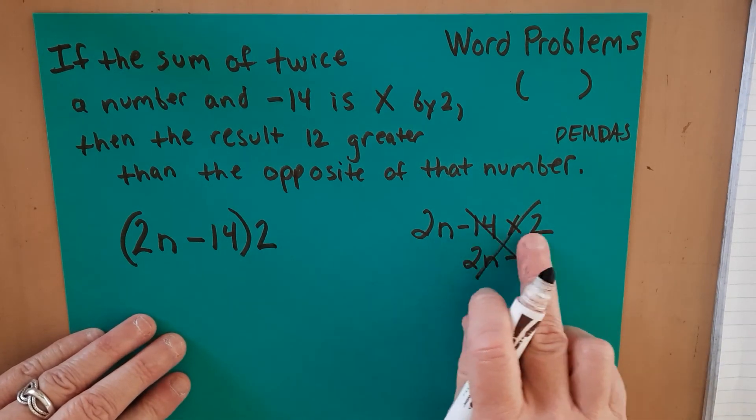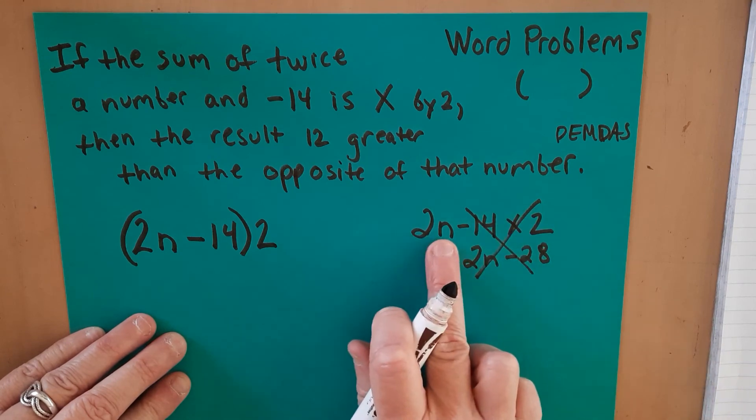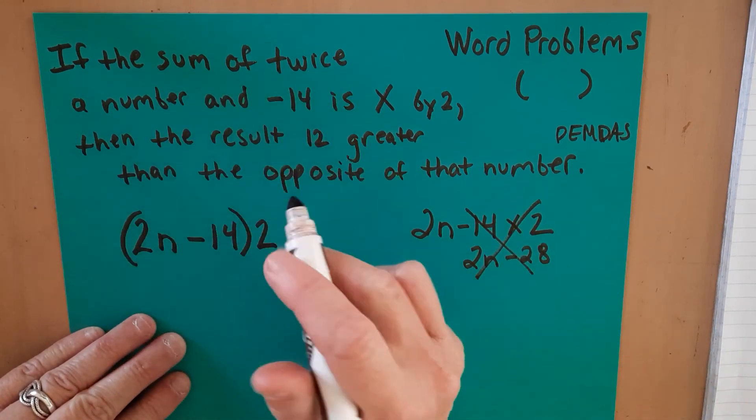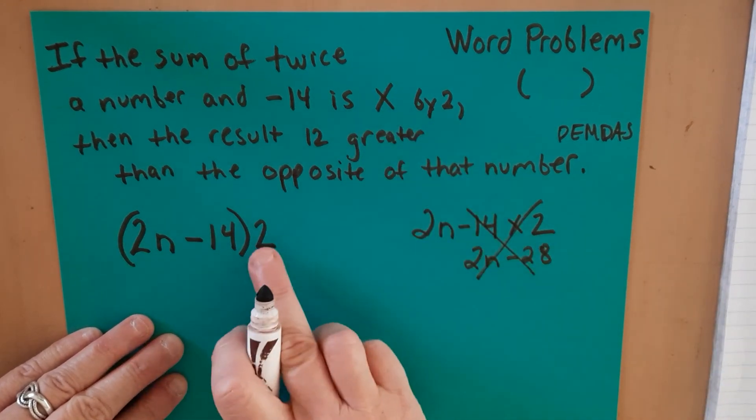Not just the 14 part. When you write it like this, just the 14 part gets multiplied by 2 and this 2n is left out. So we cannot do that. So we have to remember the sum of twice a number and negative 14. Write it down, then put it in parentheses. And then we're going to multiply that by 2.